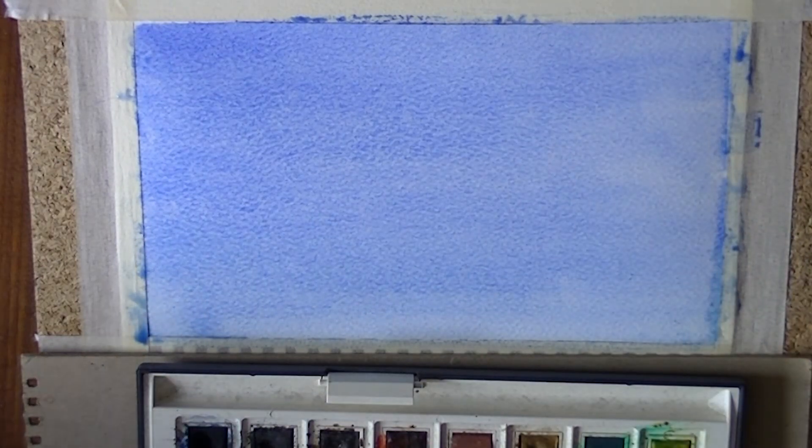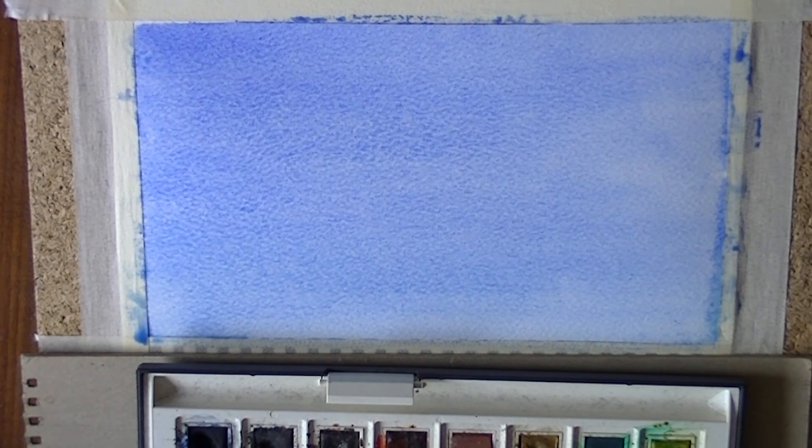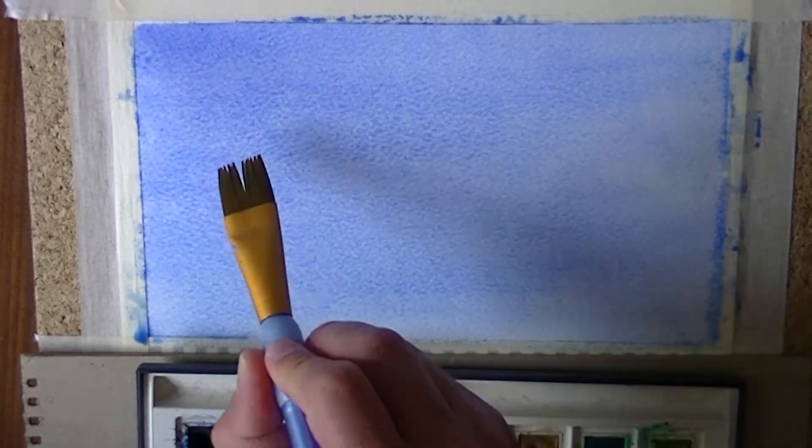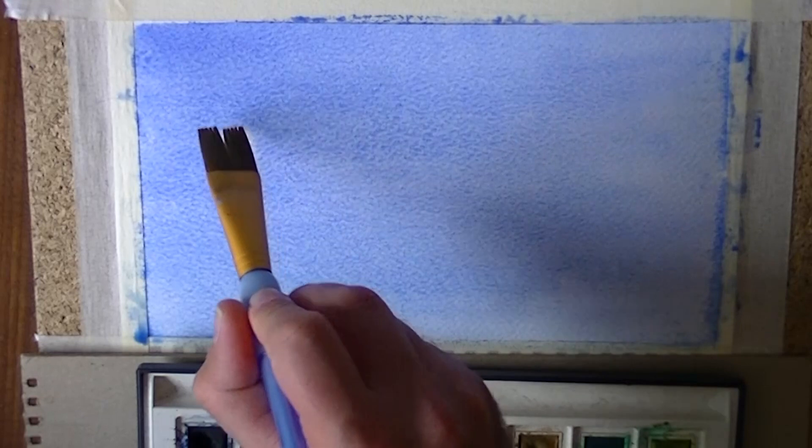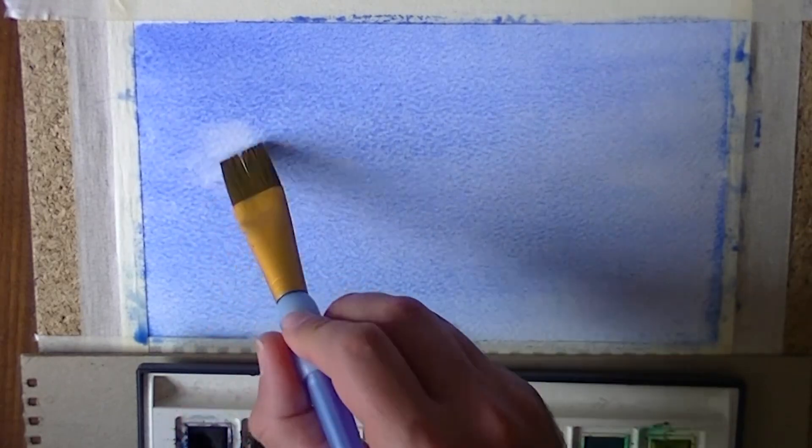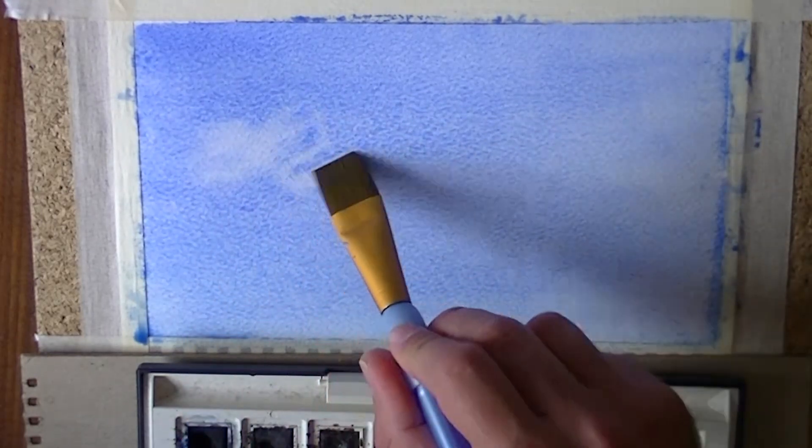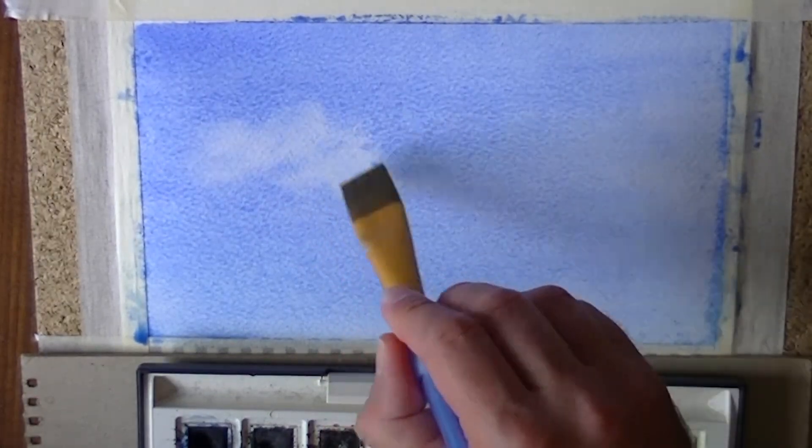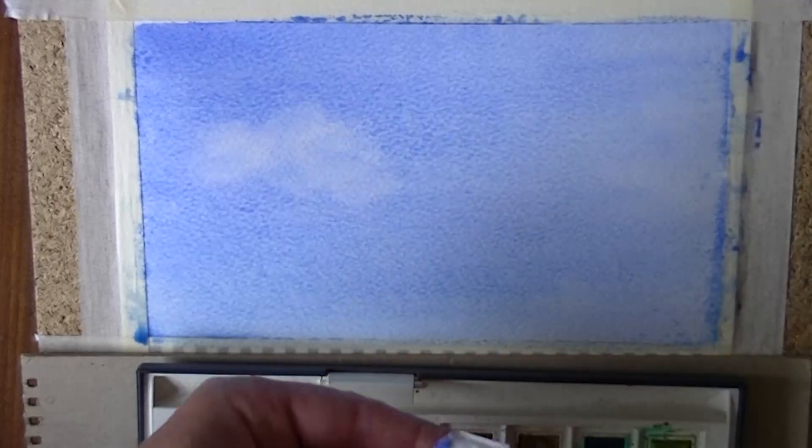So now we've got our basic wash. I'm going to add a few clouds into it. Now I'm going to take a dry brush. I've just dried that up. Same brush again. Now I'm going to go into it and what I'm going to do is just feel my way around. I'm going to have to keep drying it off because what I'm doing here is taking the excess water away.